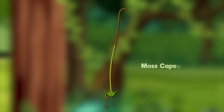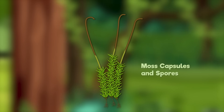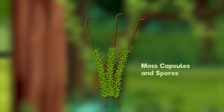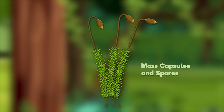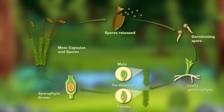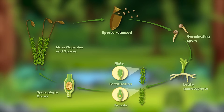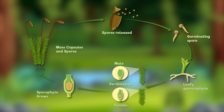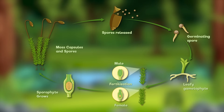Step 6: Moss Capsules and Spores. When the capsule dries out, it opens up and releases the spores. The wind carries the spores away, and the cycle starts all over again. And that's how moss keeps growing and spreading, covering rocks and trees with its soft, green blanket. Nature is amazing.